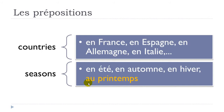When talking about seasons, we have four seasons and as usual in French, there is one exception. For three of them we use EN: en été (in summer), en automne (in autumn), en hiver (in winter) — make the liaison: en hiver. But for printemps (spring), you use AU: au printemps, not EN.